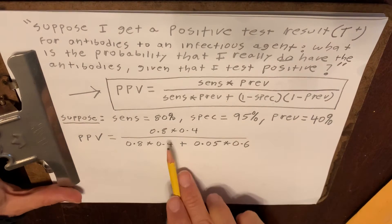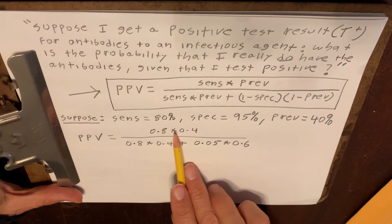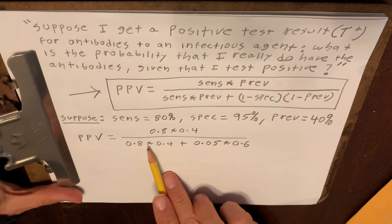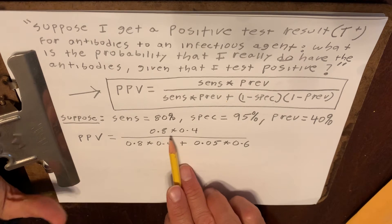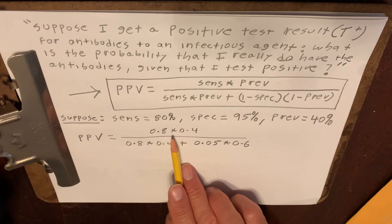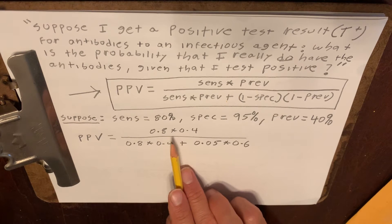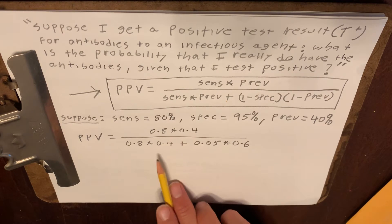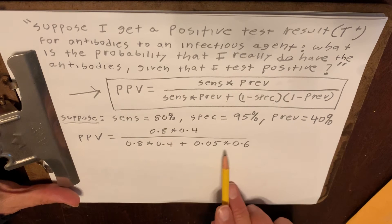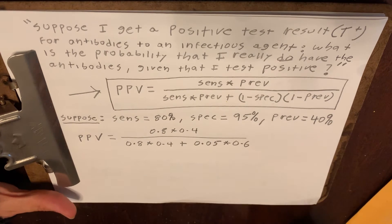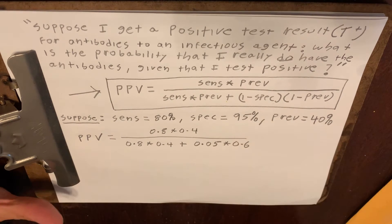I use asterisks instead of an x or a dot because I don't want to confuse anybody — it might look like a variable x or a decimal point. So I will always use asterisks when it comes to multiplication.